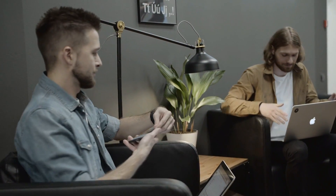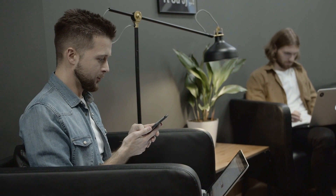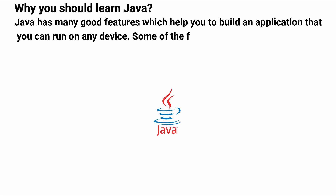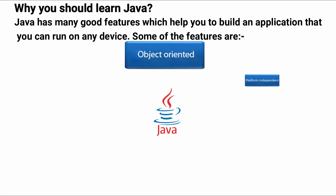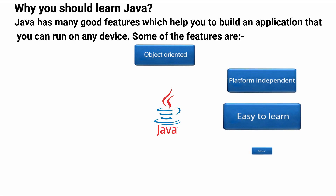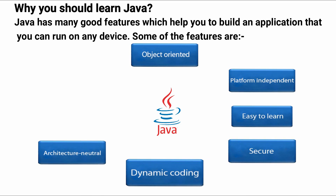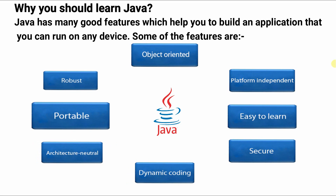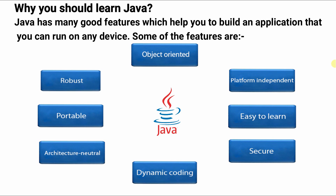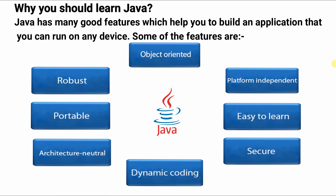Java is a very powerful programming language as compared to other programming languages because Java has many good features which help you to build an application that you can run on any device. Some of the features are: object-oriented, platform-independent, easy to learn, secure, dynamic coding, architecture-neutral, portable, and robust. Due to these special features, you can create applications that run not only on Windows but also on other operating systems like Linux, Mac, Android OS and so on. This is the reason Java is considered the most powerful and popular programming language in modern technology.